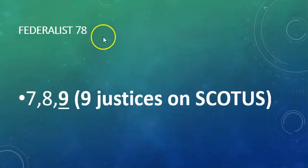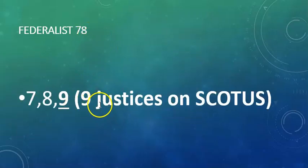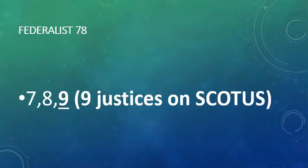Let's go to Federalist 78. Seven, eight, nine — and there are nine justices on the Supreme Court. So we know that Federalist 78 is all about the Supreme Court.